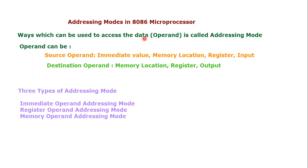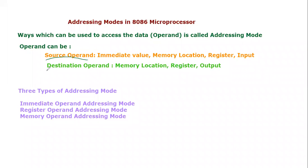Data is normally termed as operand. Whenever we use the word operand, we are referring to the data. So the ways by which data or the operand can be accessed is known as addressing mode. There are a number of ways by which you can use operand or data, and that particular method is known as addressing mode. Operands can be two types: either source operand or destination operand.